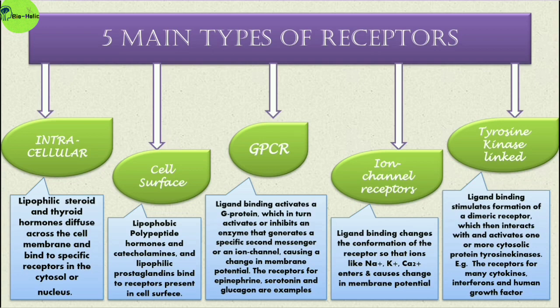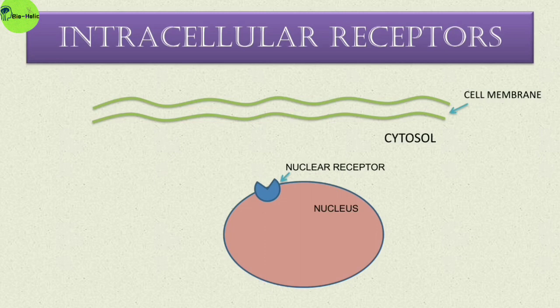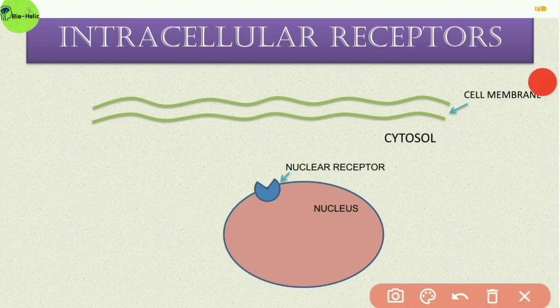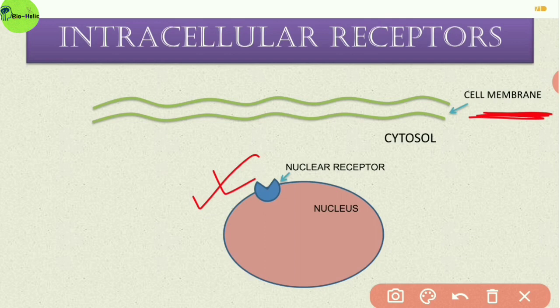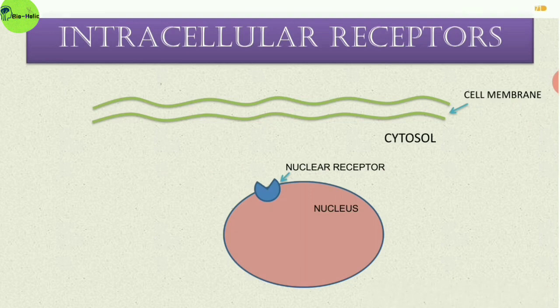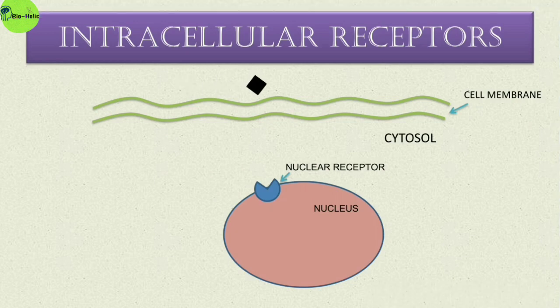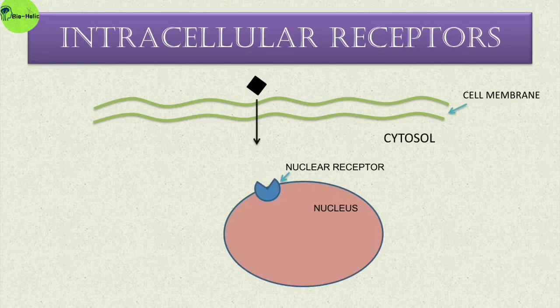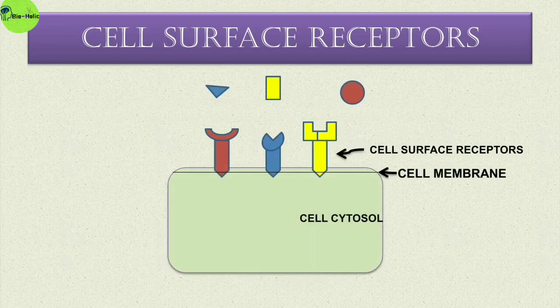Let's look at these visually. For intracellular receptors: suppose this is the cell membrane and this is the nucleus. A lipophilic hormone can easily penetrate the cell membrane and then bind to an intracellular receptor, causing cellular responses. For cell surface receptors: just as a specific key is made for a specific lock, specific ligands bind to specific receptors present on the cell surface, later producing physiological changes.